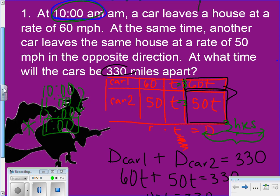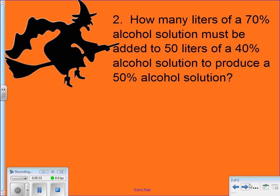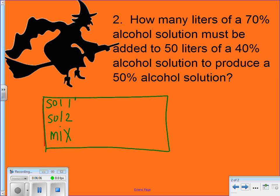Alright, that was kind of a neat question. Let's do a mixture problem now. This is one of the liquid ones that deals with percentages. So let's get that chart set up. Alright, so we've got, let's see, how many liters of a 70% alcohol solution must be added to 50 liters of a 40% alcohol solution to produce a 50% alcohol solution? I'm going to say solution one, solution two, and then of course we have our mixture.